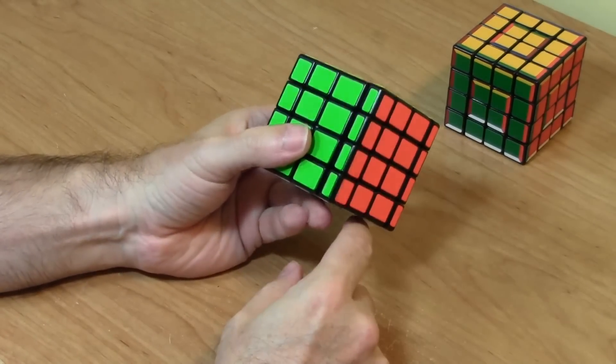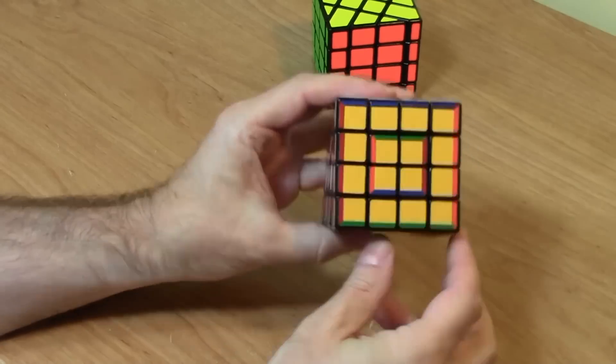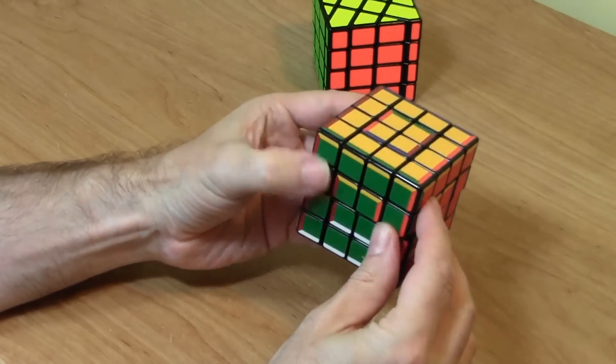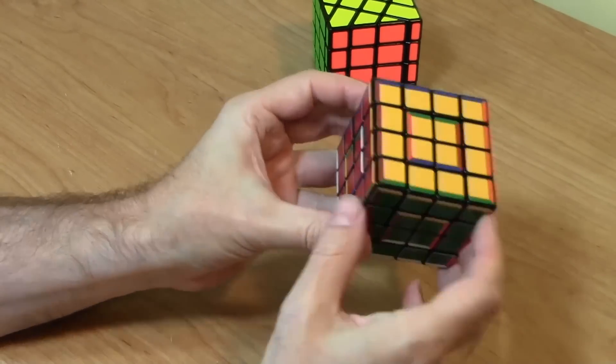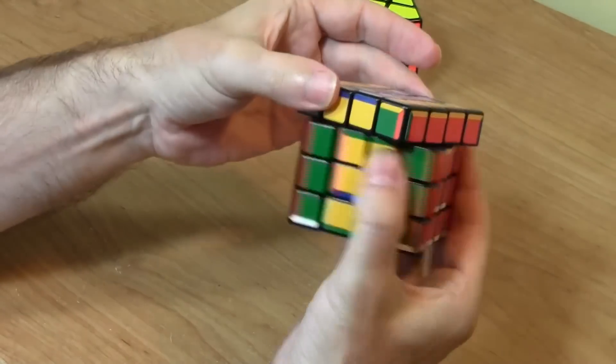Okay, so that's how to rotate the super centers on a super cube. As you can see, this one's still messed up. So let's just fix it back.